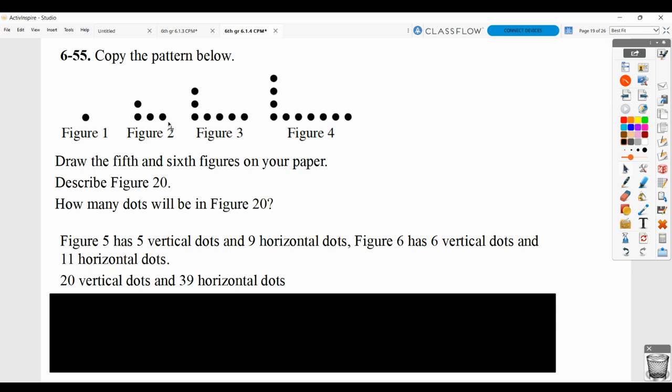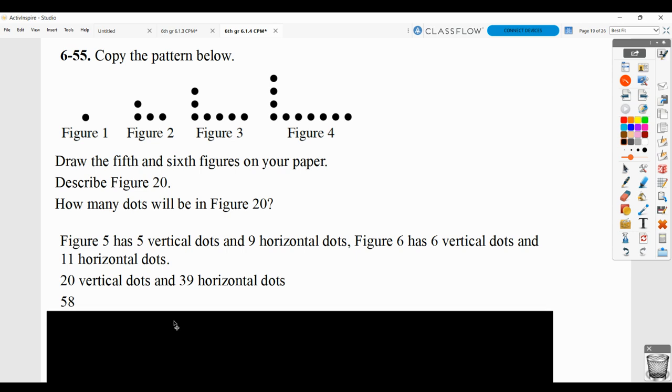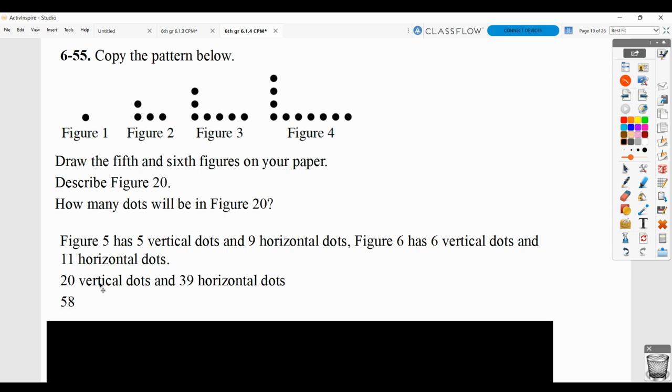So, again, that's a little bit possibly confusing. You kind of have to look for what the pattern is that makes the most sense to you. But figure 5 then would have 5 vertical dots and 9 horizontal, again, 5 times 2 minus 1. Figure 6 would have 6 vertical dots and 11 horizontal, 6 times 2 minus 1. We just said figure 20 would have 20 vertical dots and 39 horizontal, 20 times 2 minus 1.